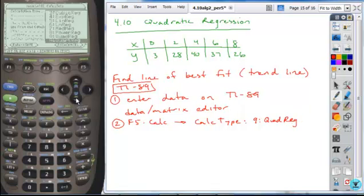And now, make sure you don't mistake that with the next one below that, which is quartic regression. That means the highest power is 4. And we don't want that. We want the quadratic regression for this. So choose quadratic regression.